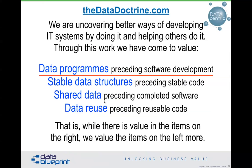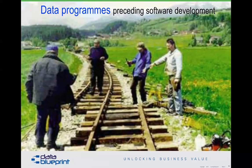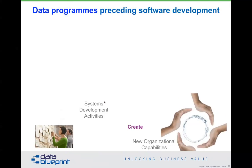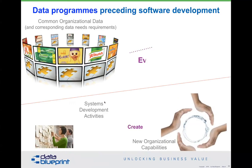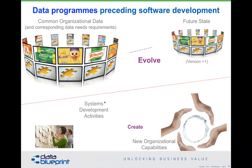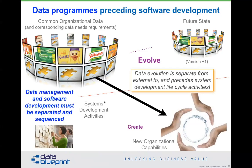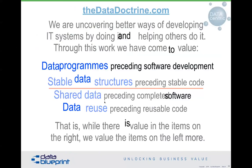Data programs precede software development. These are two incompatible things — we talked about the project versus program mentality. IT is very good at creating new things, but data operates at a different cadence, a different tempo, a different rhythm. Data evolves over time, and that evolution means we need to separate and sequence these activities. Data evolution needs to be separated from, made external to, and precede system development activities. Data management and software packages must be separated and sequenced.